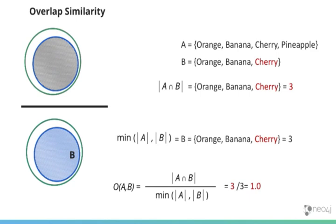Now if we change just one item here—I've changed the apple for cherry in set B—we can visually see how we would get an overlap similarity of 1.0 because one set is completely contained within the other set. So overlap similarity can be used to evaluate general similarity.